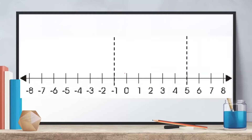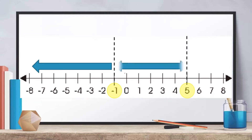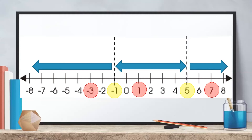Since we have two zeros, the number line will have three intervals: numbers less than −1, numbers from −1 to 5, and numbers greater than 5. From these intervals, we get a testing point. For example, in the first interval we will use −3, in the second interval we will use 1, and for the third interval we will use 7.